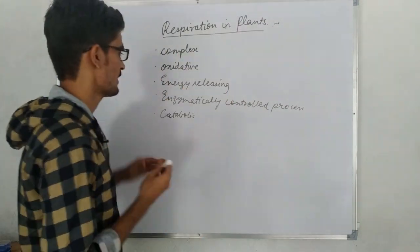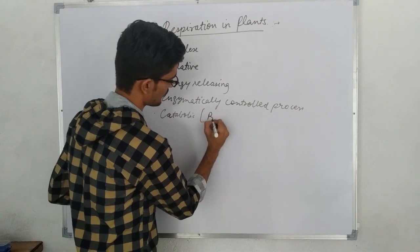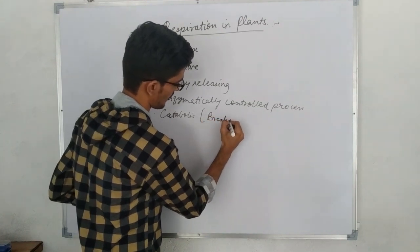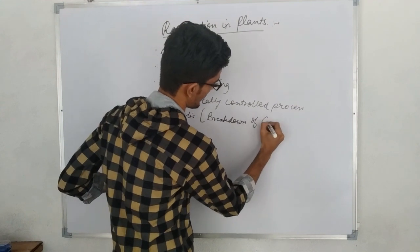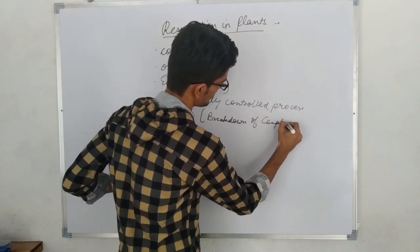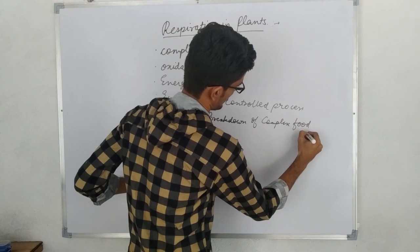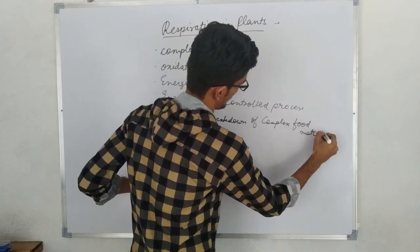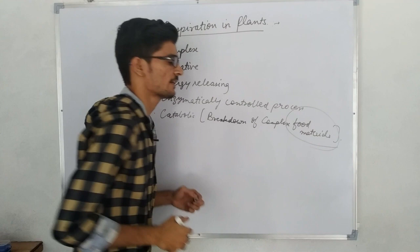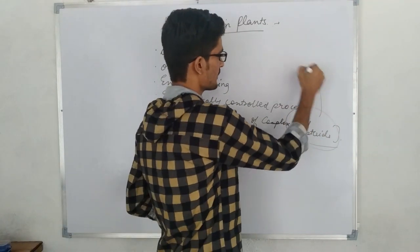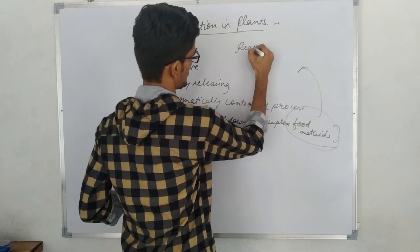Respiration is a complex, oxidative, energy-releasing, enzymatically controlled catabolic process in organisms. Catabolic process means that inside it, breakdown occurs — breakdown of complex molecules, i.e., complex food materials. These complex food materials are called respiratory substrates.